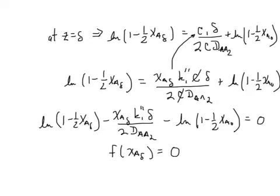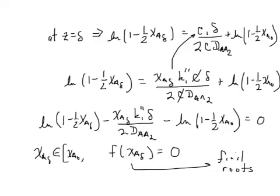Now what we have to do is find the roots of this equation. And only one of those roots would be a real physical solution, because XA delta as a mole fraction has to be confined between zero and one, but in this case there's also an upper limit which is XA0. Let's box this equation because it's quite important.